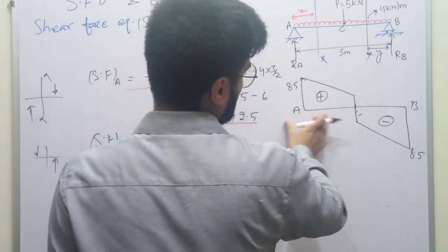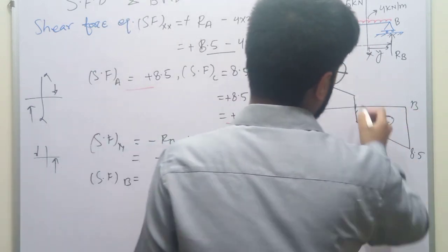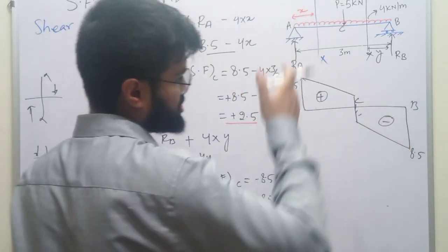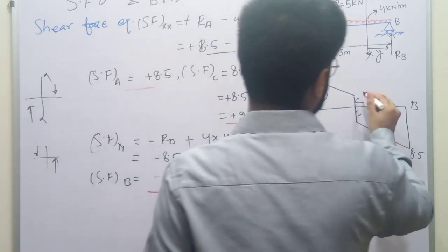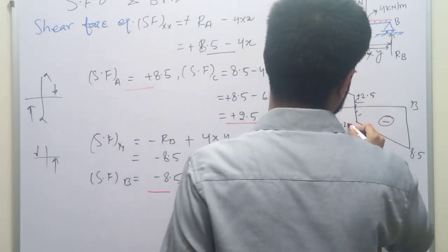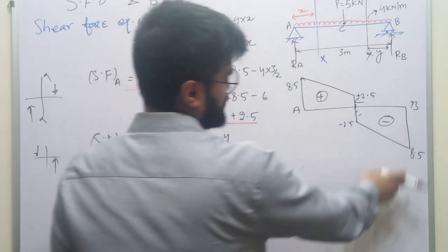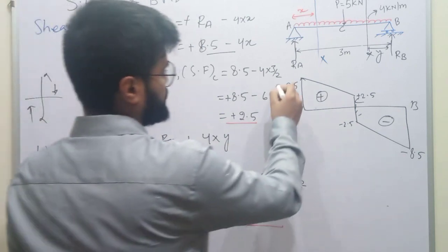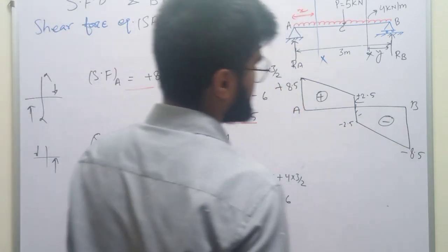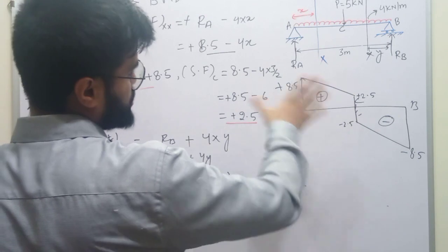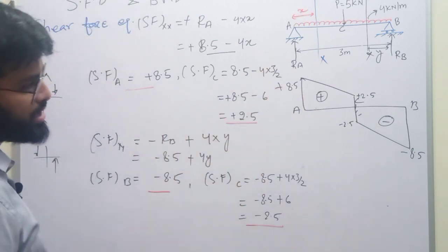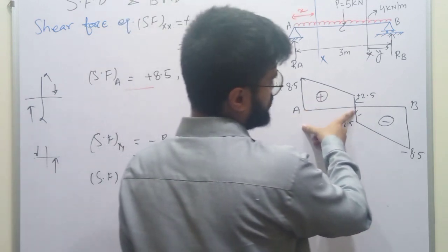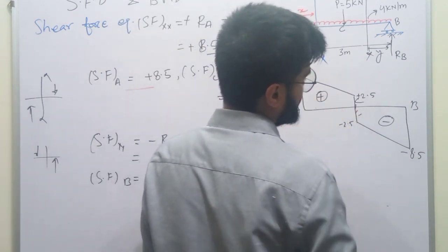A से C तक जो है वो plus रहेगा, C से B में जो है वो negative रहेगा। A से C तक linearly घटता जाएगा, C पे sudden change आएगा plus 2.5 से minus 2.5। फिर B point पे minus 8.5 हो जाएगा। यह shape force diagram हो गया। Point load C पे लग रहा था इसलिए यहाँ sudden change आया।